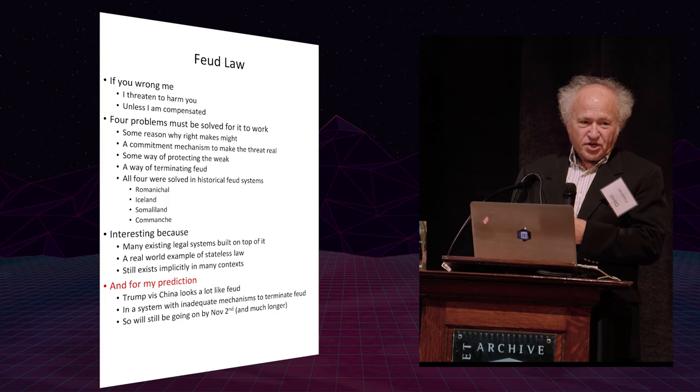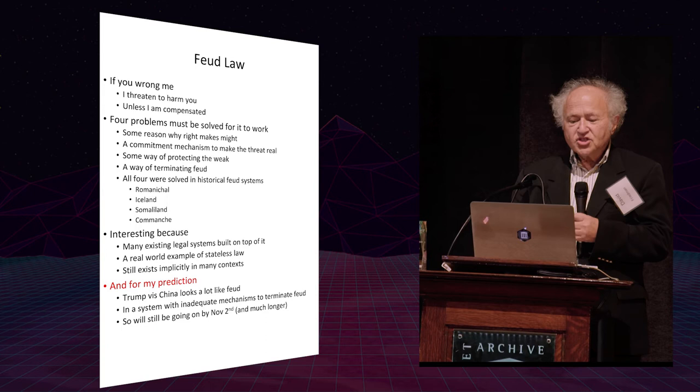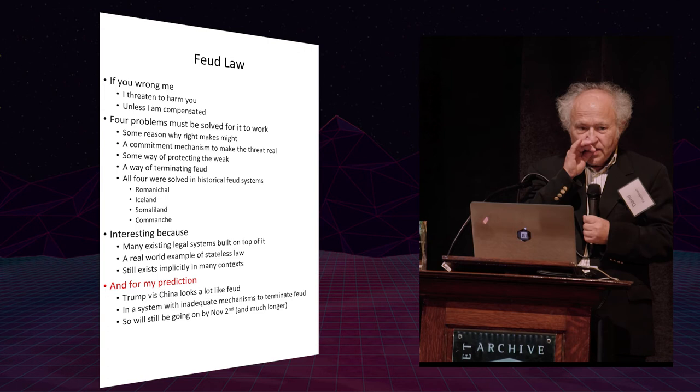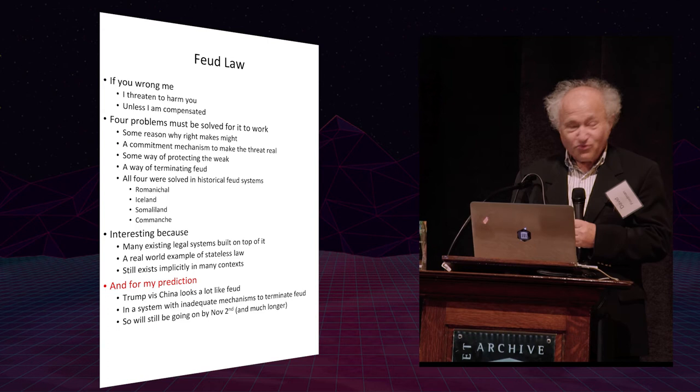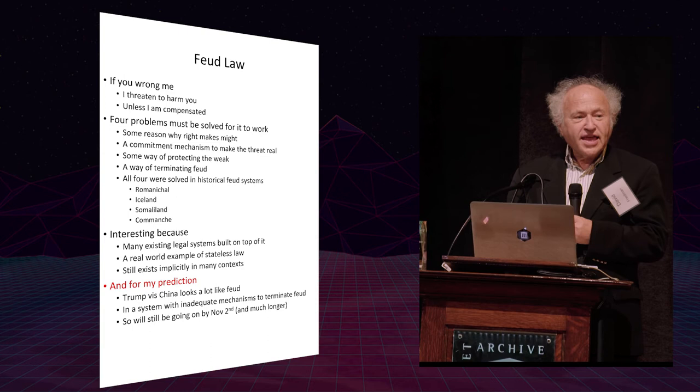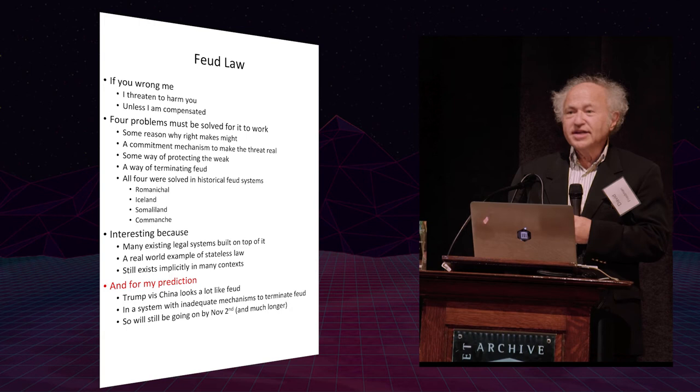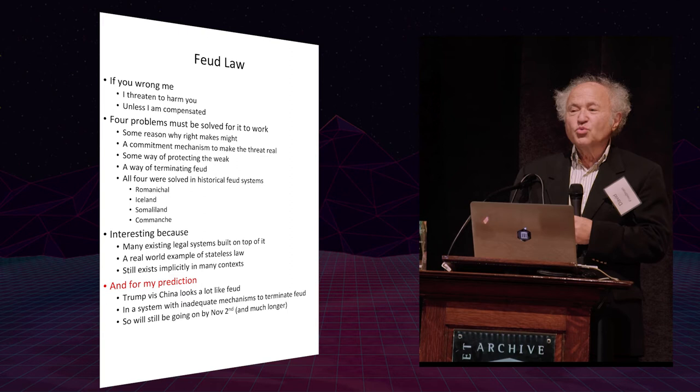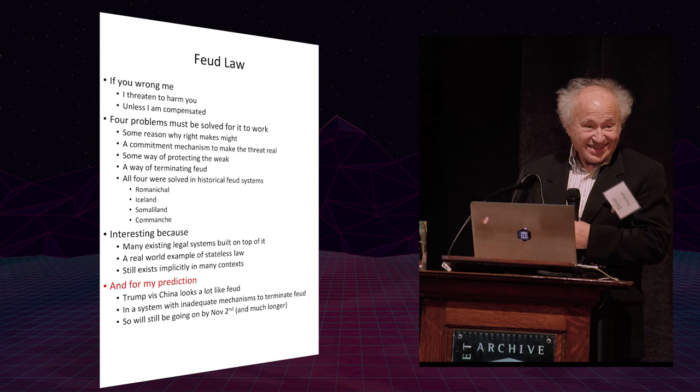Second problem you have to solve is the commitment problem. I threaten to harm you if you don't compensate me. You reply, well in that case I'll beat you up, natural enough response to make, what keeps me from backing down? Part of the answer is hardwired. We think of vengefulness as irrational, but it is in fact a rational commitment strategy. The knowledge that if you wrong me I will very much want to get back at you unless compensated is a good reason not to wrong me.